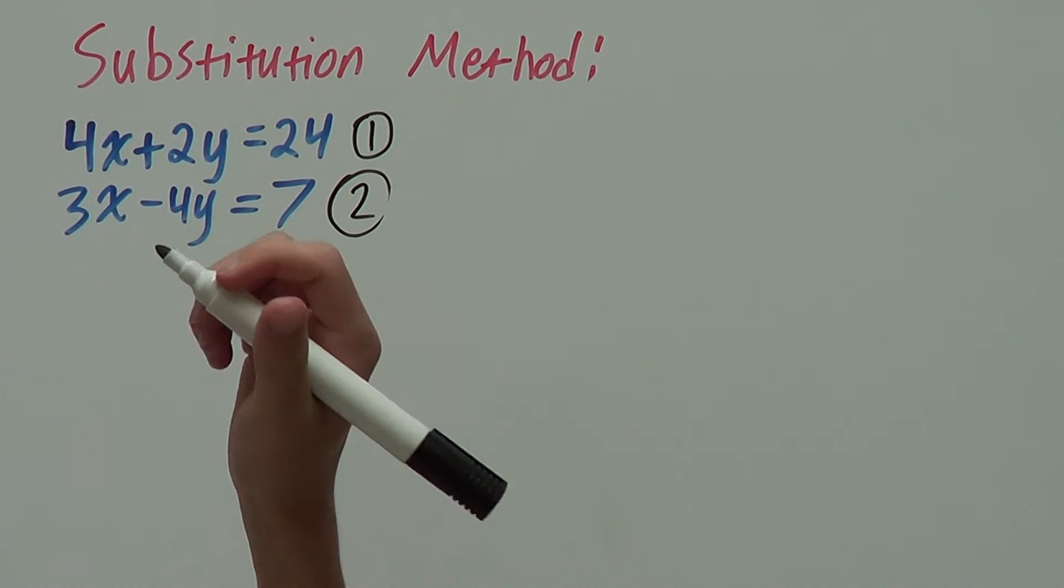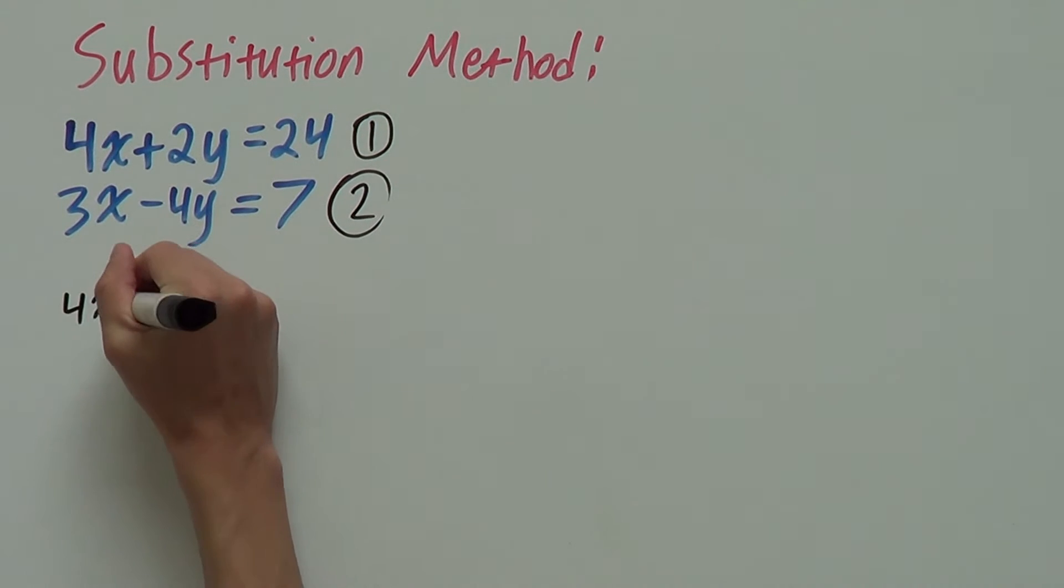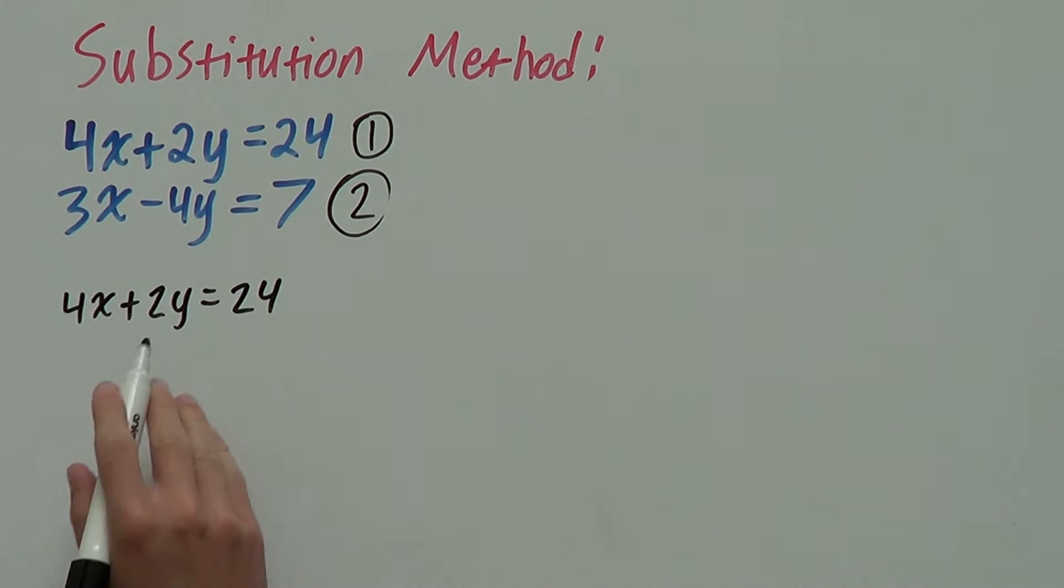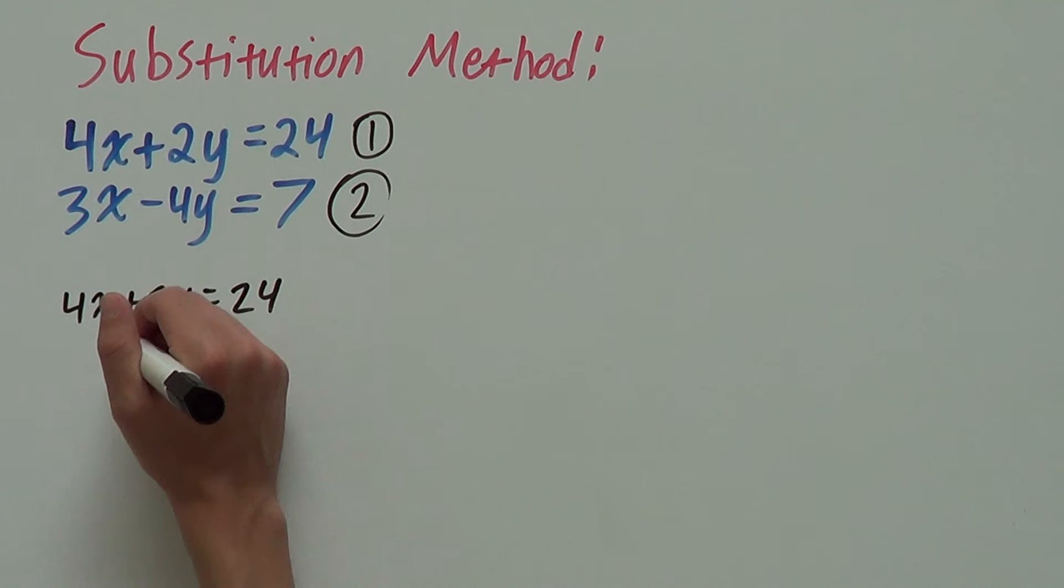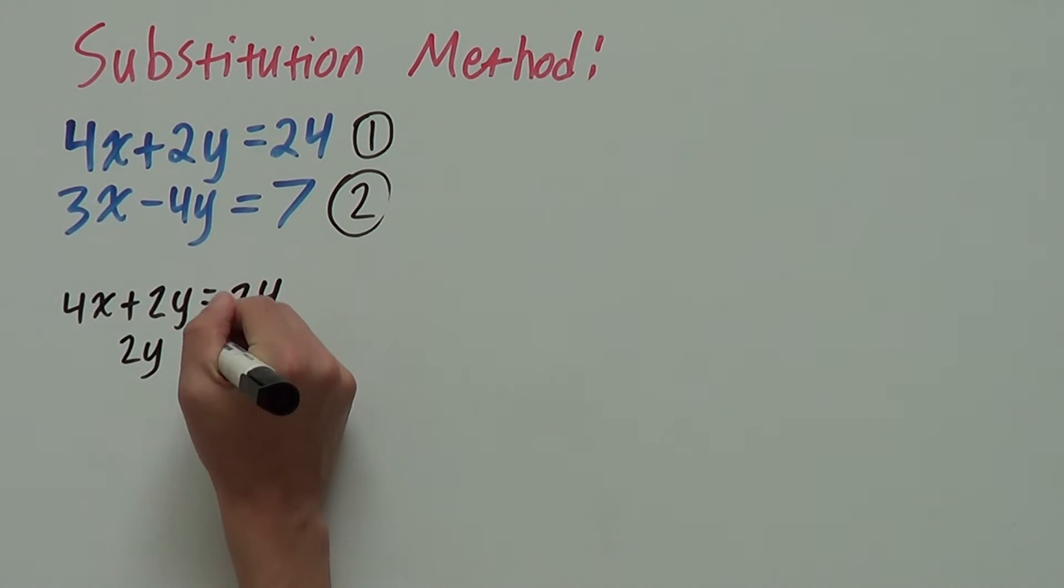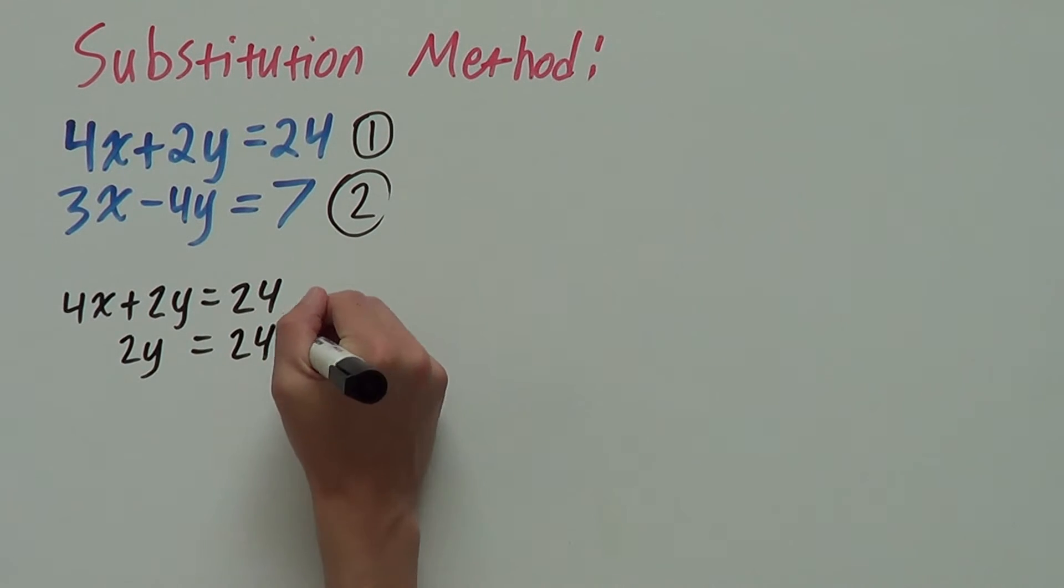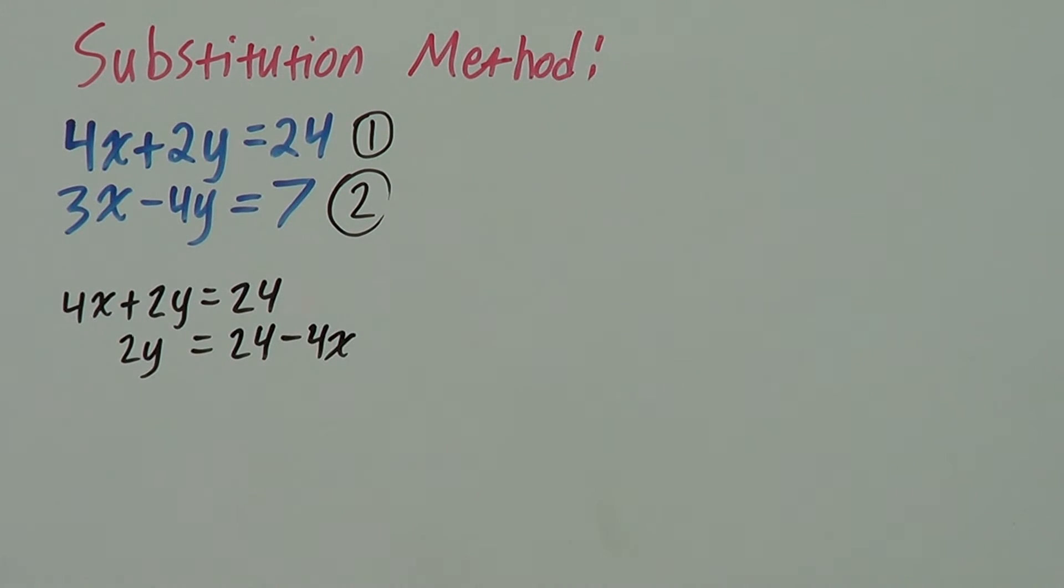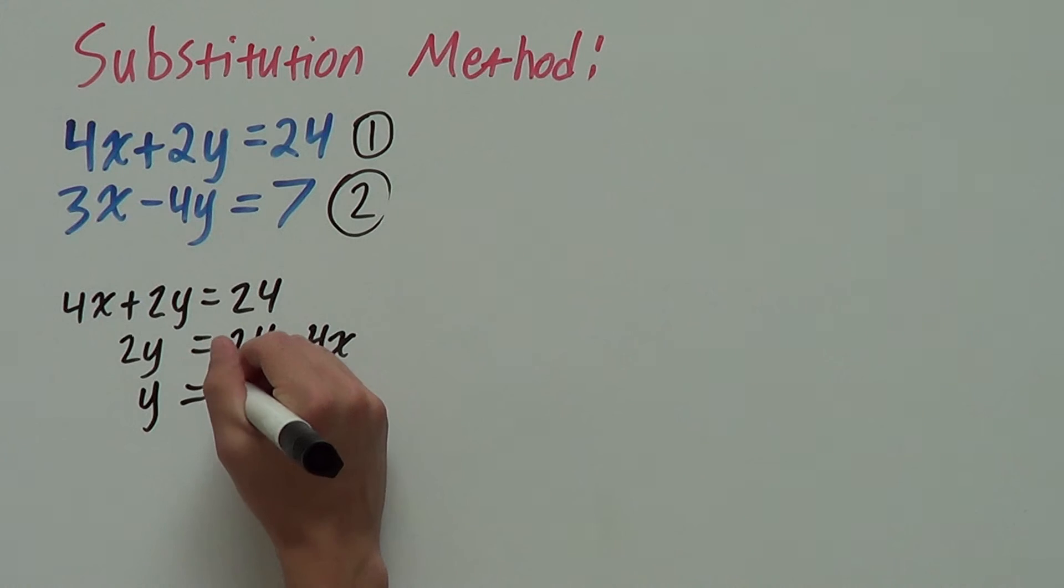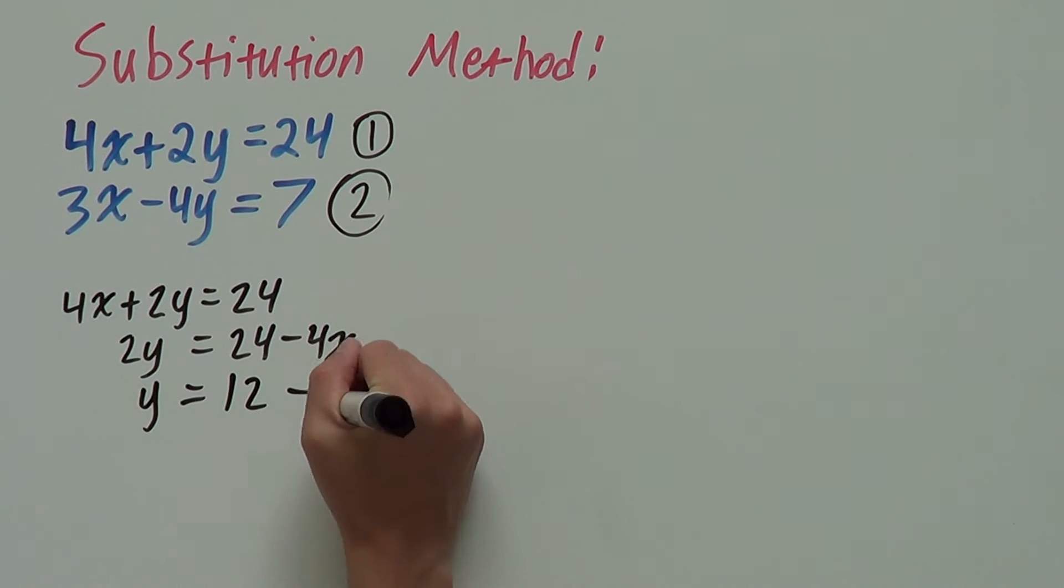So, we're solving for y and so far we have 4x plus 2y equals 24. We want y all by itself so we can have the value of it. Well, first, let's get rid of this 4x. So, move it to this side by subtracting it from both sides leaving us with 2y equals 24 minus 4x and we want y by itself so we divide both sides by 2. So, y is equal to 12 minus 2x.